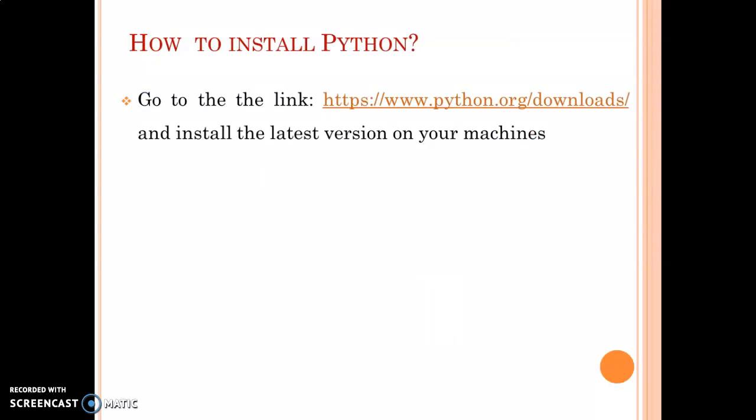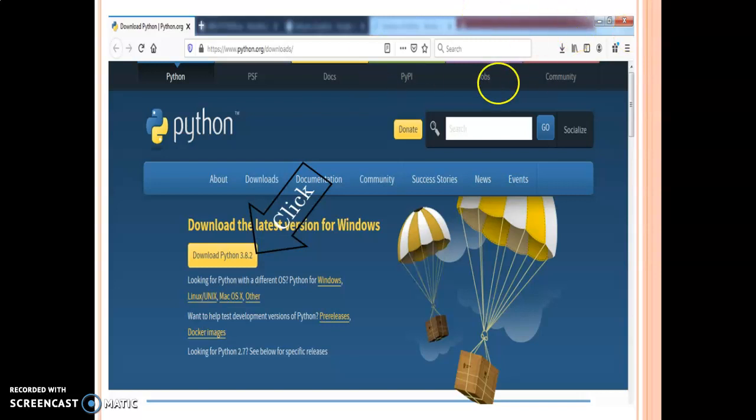Next, how to install Python. Go to the link as I displayed here and install the latest version on your machine. Now the latest version is Python 3.x. We have Python 1.x, Python 2.x, and Python 3.x. There is a lot of difference between Python 2 and 3. Now we are using Python 3 latest. All the next series, whatever I will explain, will be implemented using Python 3. Here you can see downloads and click on download Python 3.8.2 and run it. Thank you.